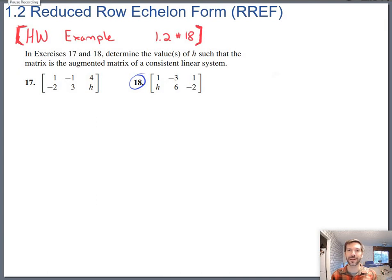Now let's take a look at number 18 from 1.2. This is not one of our assigned homework problems but it is similar to some of the others that are assigned. And it's one of the first times that we have seen a variable, a letter like H in a matrix that we're trying to row reduce.